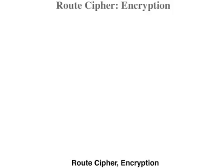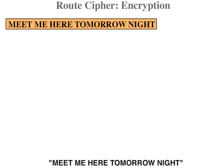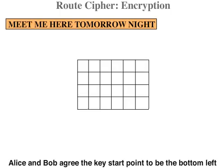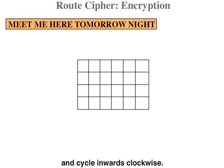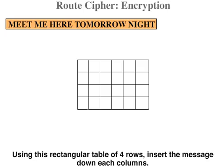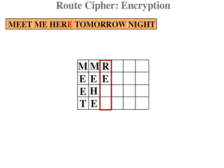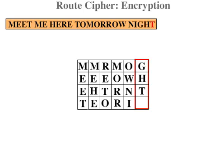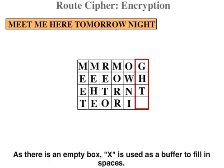Route cipher encryption. Alice wants to send Bob the message 'Meet me here tomorrow night.' Alice and Bob agree the key start point to be the bottom left and cycle inwards clockwise. Using this rectangular table of 4 rows, insert the message down each column. As there is an empty box, X is used as a buffer to fill in spaces.